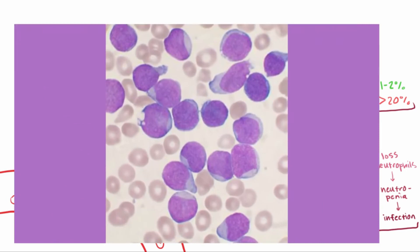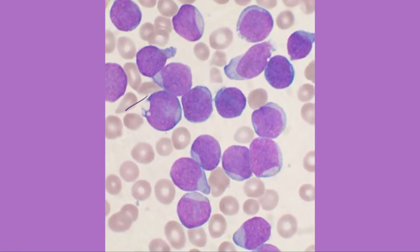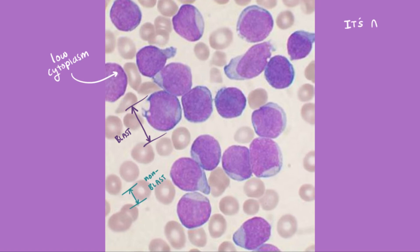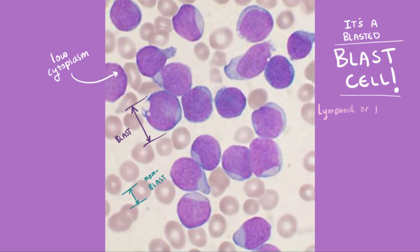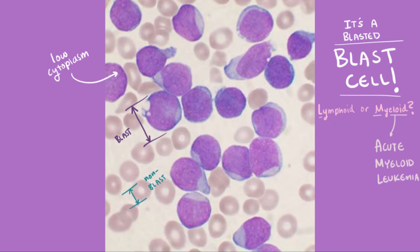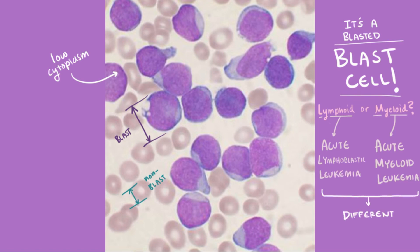If you took a peek at a blood smear, there are a couple things to look for. First, look at how large these blast cells are compared to the normal cells. Another thing is that they'll be pretty immature, judging by the relatively low amount of cytoplasm. So we've figured out that it's a blast cell — but what kind of blast cell is it? Lymphoid or myeloid? If they have a buildup of myeloblasts, they'll have acute myeloid leukemia, whereas a buildup of lymphoblasts means acute lymphoblastic leukemia. These two are very different and need very different treatments.